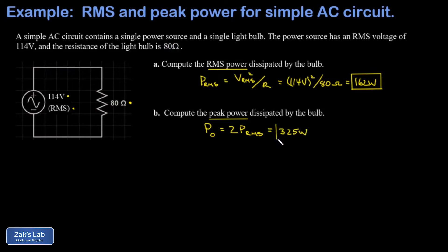So the instantaneous power is peaking at 325 watts but dropping to zero twice per cycle. When you average it all out, you end up with an average of 162 watts, which is the practical power output for that electrical device.